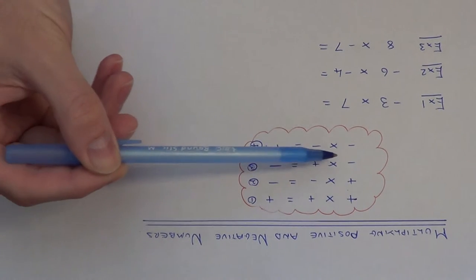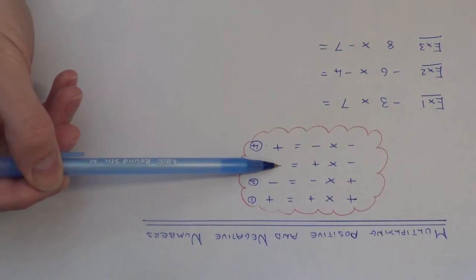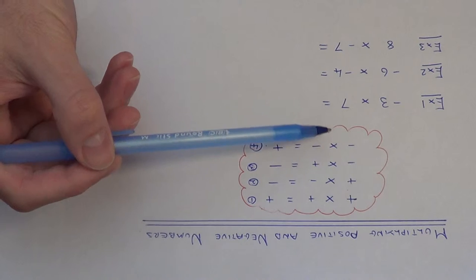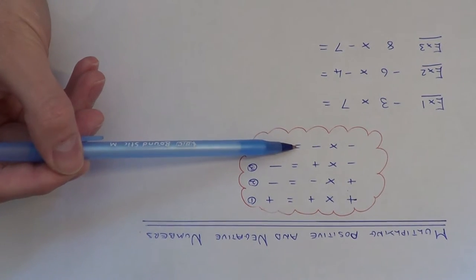Rule three: if you multiply a negative by a positive, the answer you get is negative. And the final rule: if you multiply a negative by a negative, you get a positive.